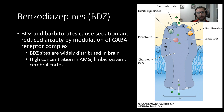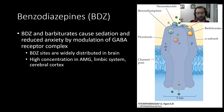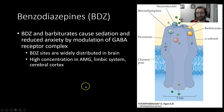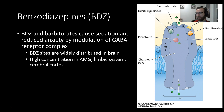We should mention benzodiazepines, which we'll abbreviate as BDZ. Benzos and barbiturates cause sedation and anxiety reduction by modulation of the GABA receptor complex. Benzodiazepine binding sites are widely distributed throughout the brain, but we see high concentrations in the amygdala, limbic system, and cerebral cortex — regions important for regulating fear and anxiety. It seems intuitive that benzos are a good class of drug to deal with this, and we'll discuss their interactions in more detail later.